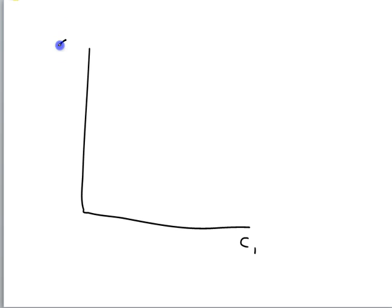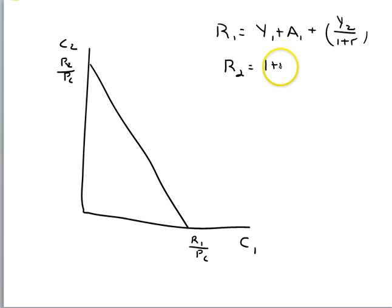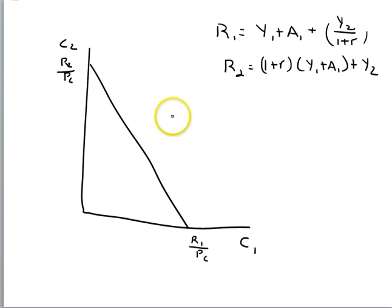So our intertemporal budget constraint, or intertemporal budget line, looks at consumption in year one and consumption in year two, plotting R1/PC on the horizontal axis and R2/PC on the vertical axis — where each of these can be expanded. R1 goes in one numerator and R2 in the other, and we can confirm that the slope is negative (1 + R).